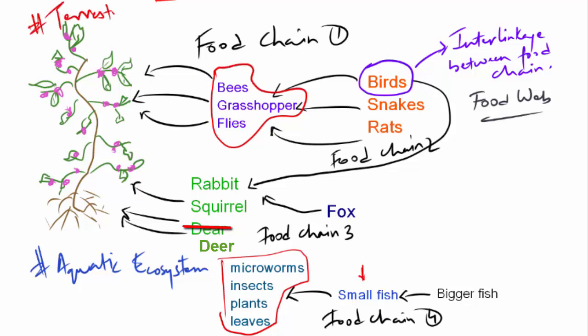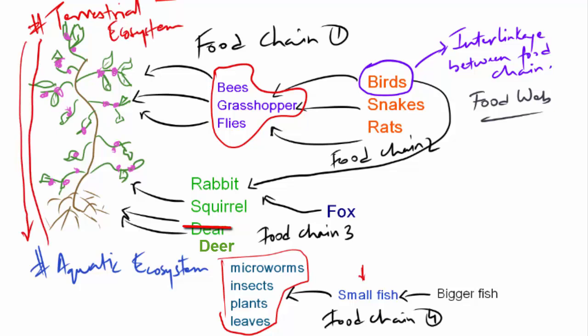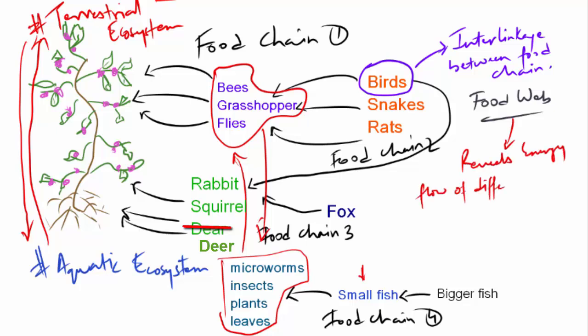All of a sudden, there is an indirect interaction between the terrestrial food chain and the aquatic food chain — meaning there is an indirect interaction between species of different ecosystems. This kind of interlinkage of two different food chains, regardless of which ecosystem they belong to, forms a food web. Basically, the role of a food web is to reveal the patterns of energy flow through different species and ecosystems.